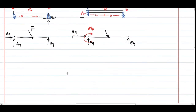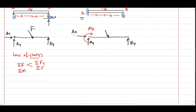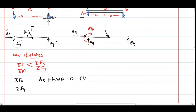Once we have the free body diagram, the system is in static equilibrium, so we apply the laws of statics: horizontal force balance, vertical force balance, and moment balance. For the first case, we have three unknowns — Ax, Ay, and By — with F given. The horizontal force balance gives Ax + F·cosθ = 0, so Ax = −F·cosθ, meaning the actual direction of Ax is towards the left.